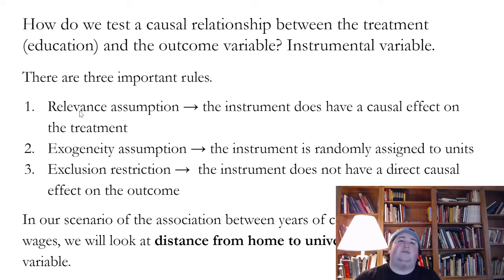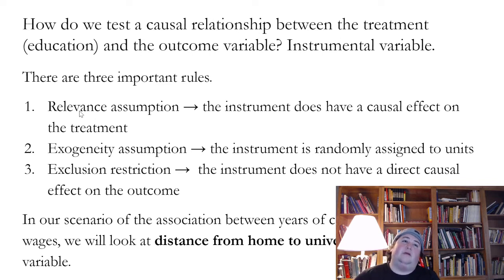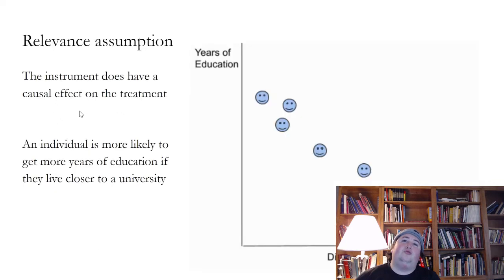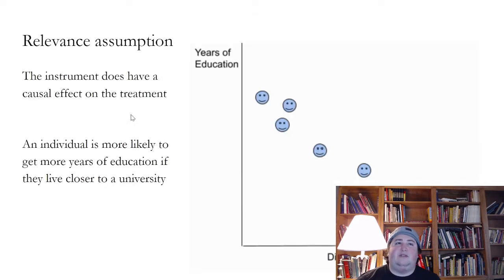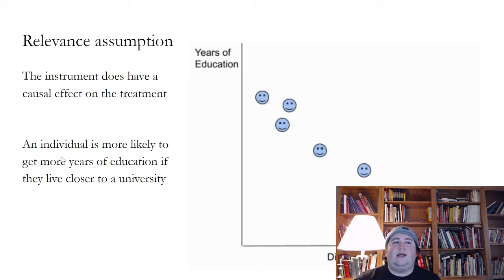The first is the relevance assumption: the instrument does have a causal effect on the treatment. The instrument we're going to use in this case is the distance from home to your university. If you live closer to a university, you likely have more years of education; if you live further away, it could cause you to have less years of education. So is there a relationship between our instrument — distance from home to university — and years of education? The answer is definitely yes.